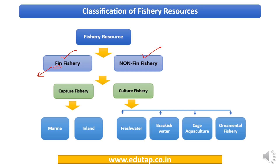Fin fisheries refers to those fishes that bear fins, which are placed under the superclass Pisces — including bony fishes and cartilaginous fishes, as covered in the taxonomy lecture. Non-fin fisheries includes all other aquatic organisms, such as crabs and prawns, which belong to the phylum Arthropoda and are not under superclass Pisces.